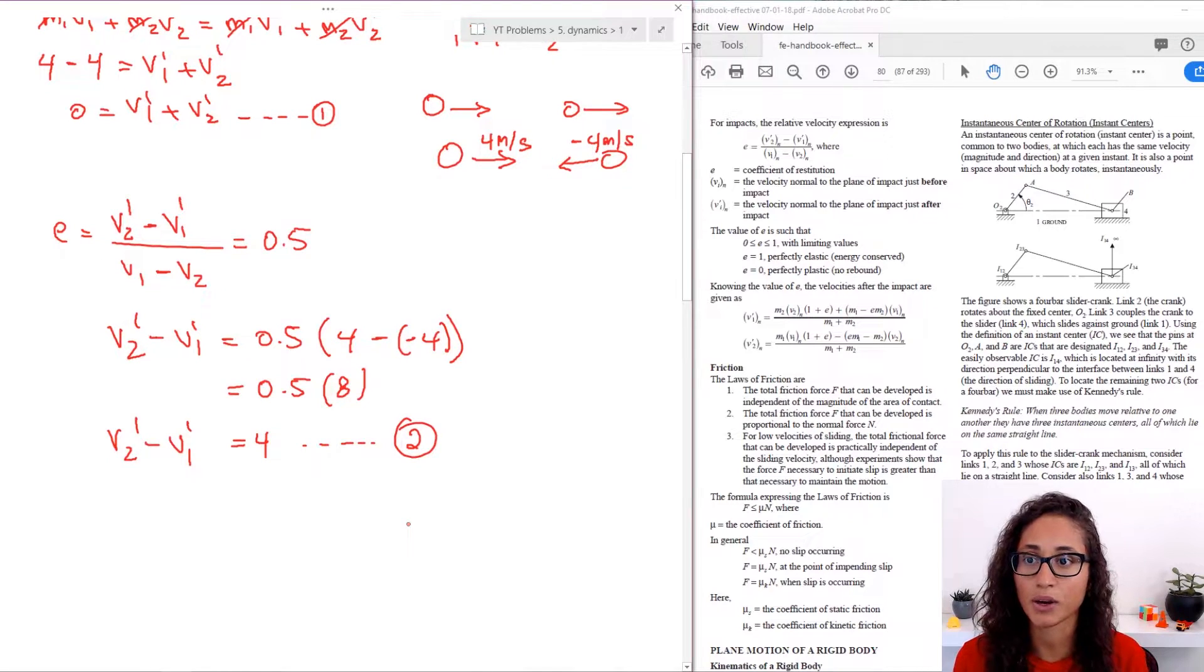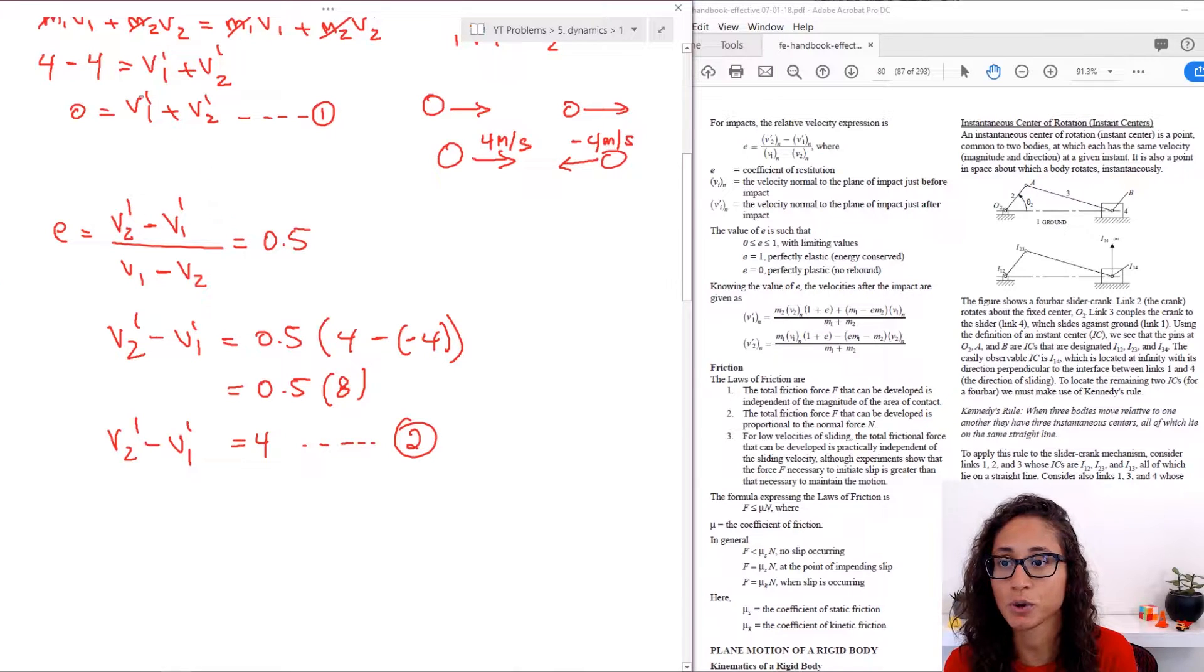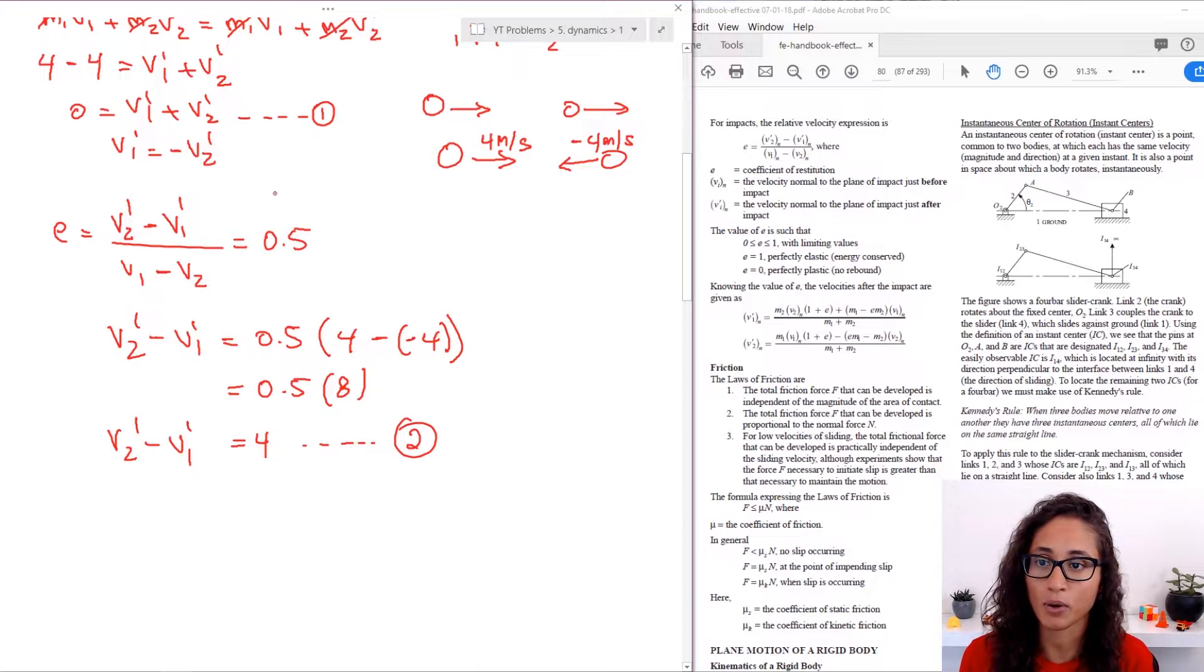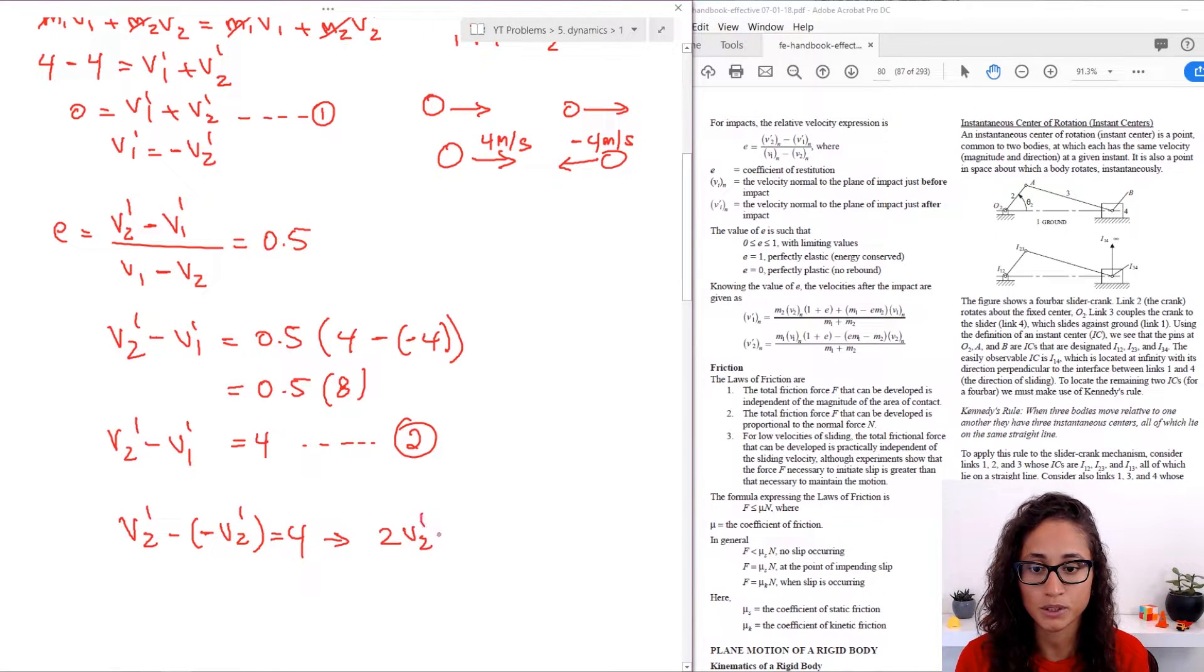Okay, so now I have two equations, two unknowns, I can easily solve for this. So in here, what we can do is V1 prime equals minus V2 prime. And now I can substitute this equation in here. So I would get V2 prime, and then I have minus here, V1 prime we said is equal to minus V2 prime. So I'm going to have minus V2 prime here equals four. So V2 prime plus V2 prime is going to be two V2 prime equals four. So V2 prime equals two meters per second.